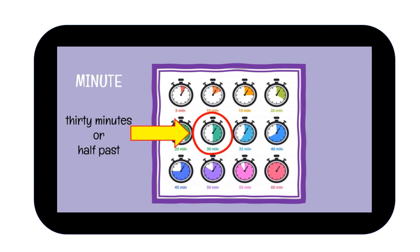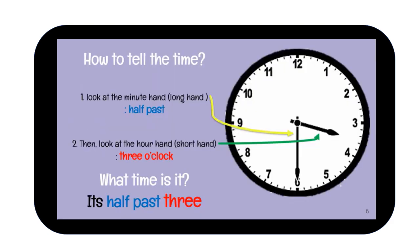For today's lessons, I want to focus on 30 minutes. 30 minutes — we call it half past. It's a half of the clock, so we call it half past. So this is how we tell the time. We have to look at the long hand. This is the long hand that represents minutes, and the short hand — it shows the hour.